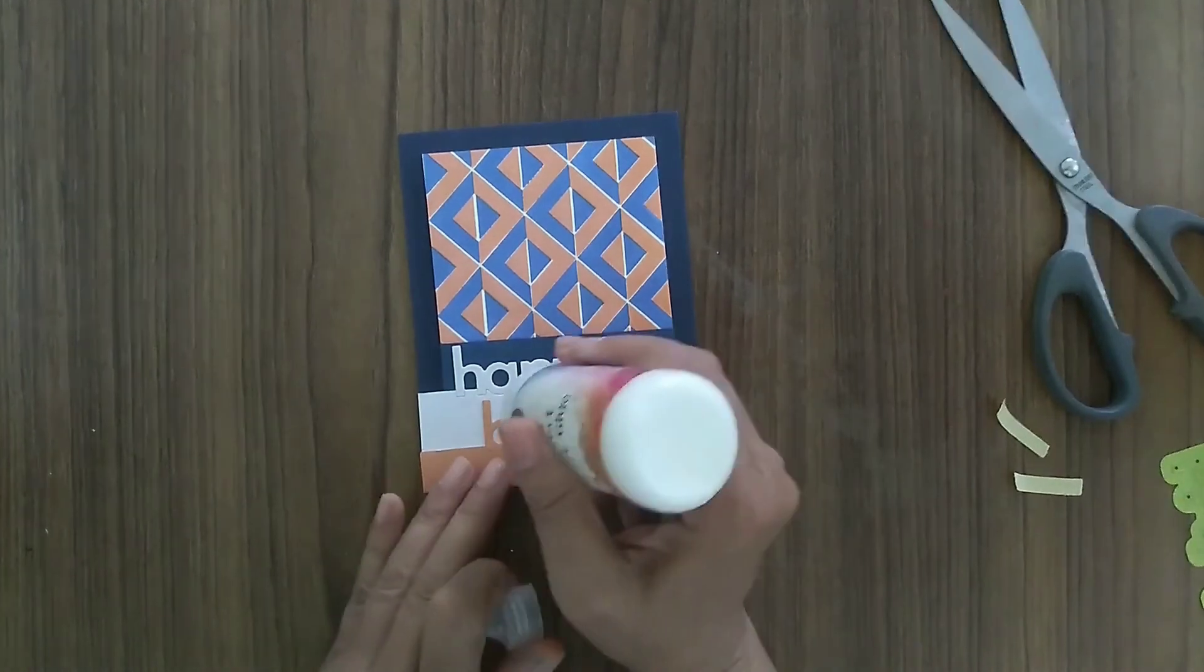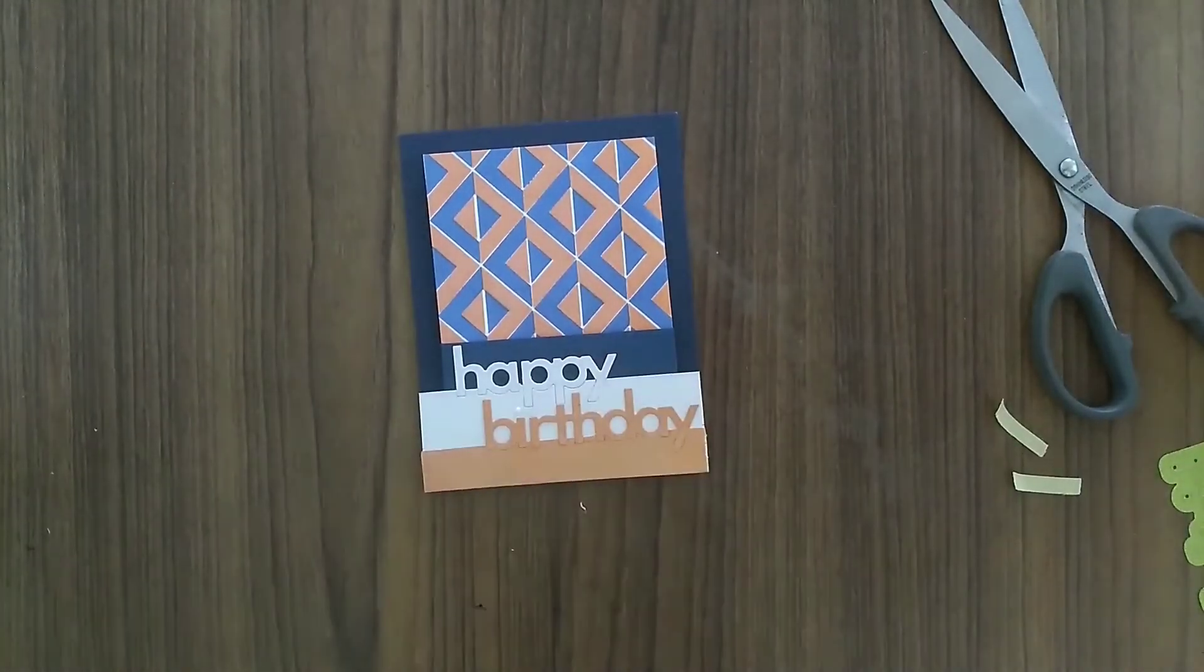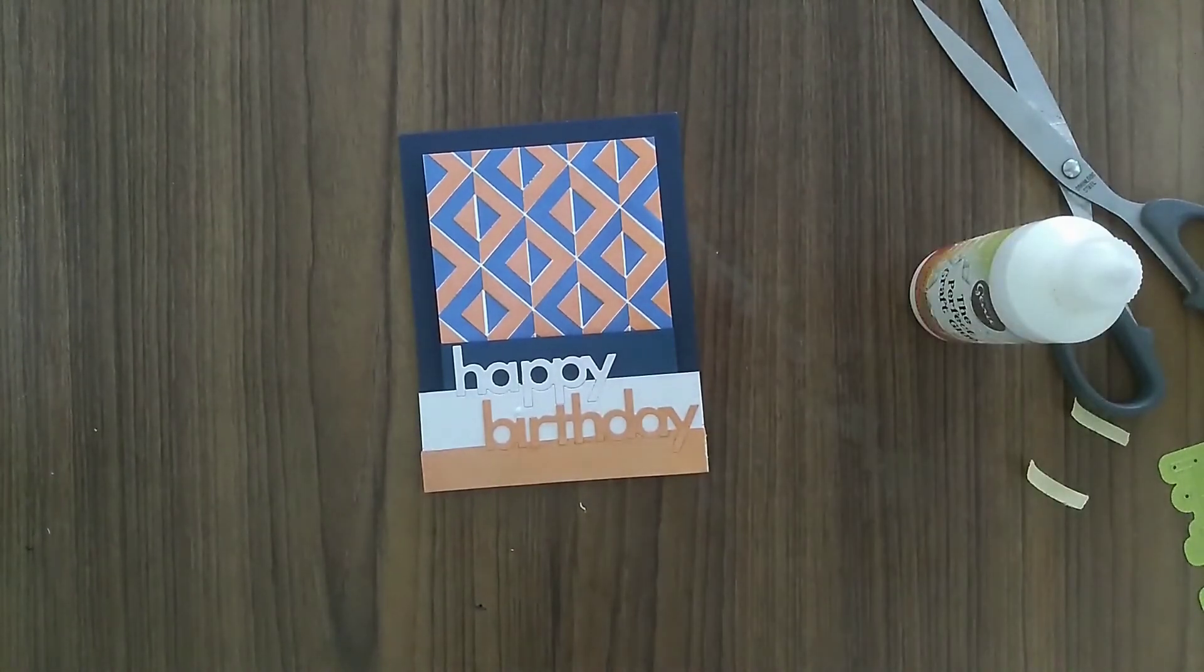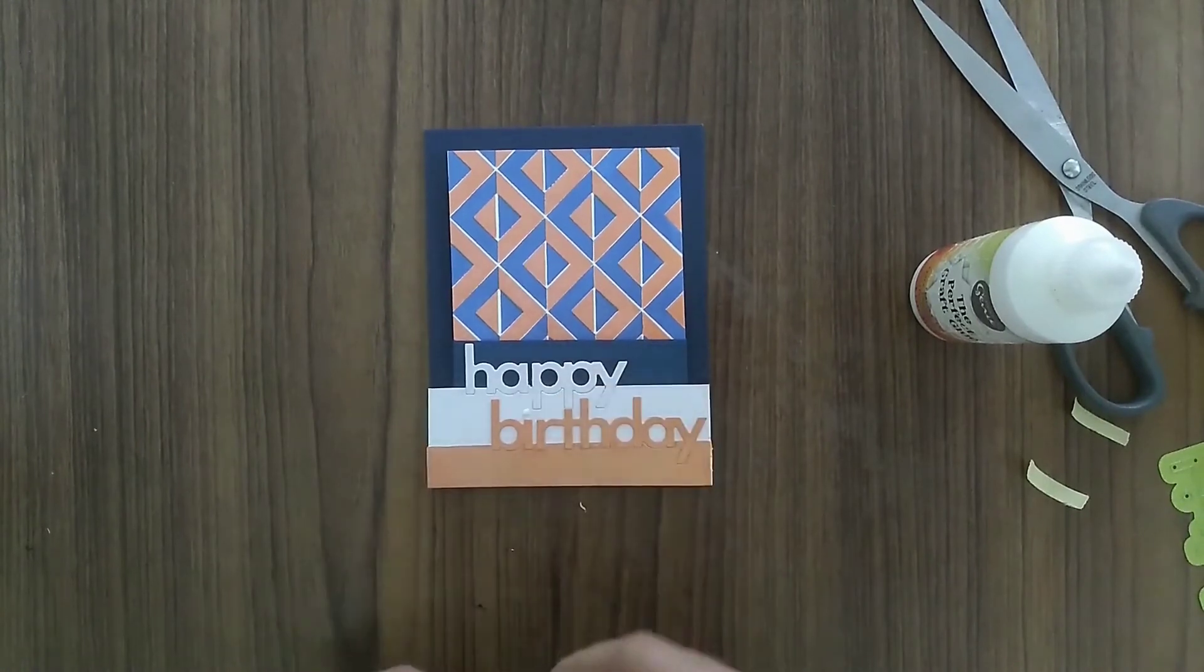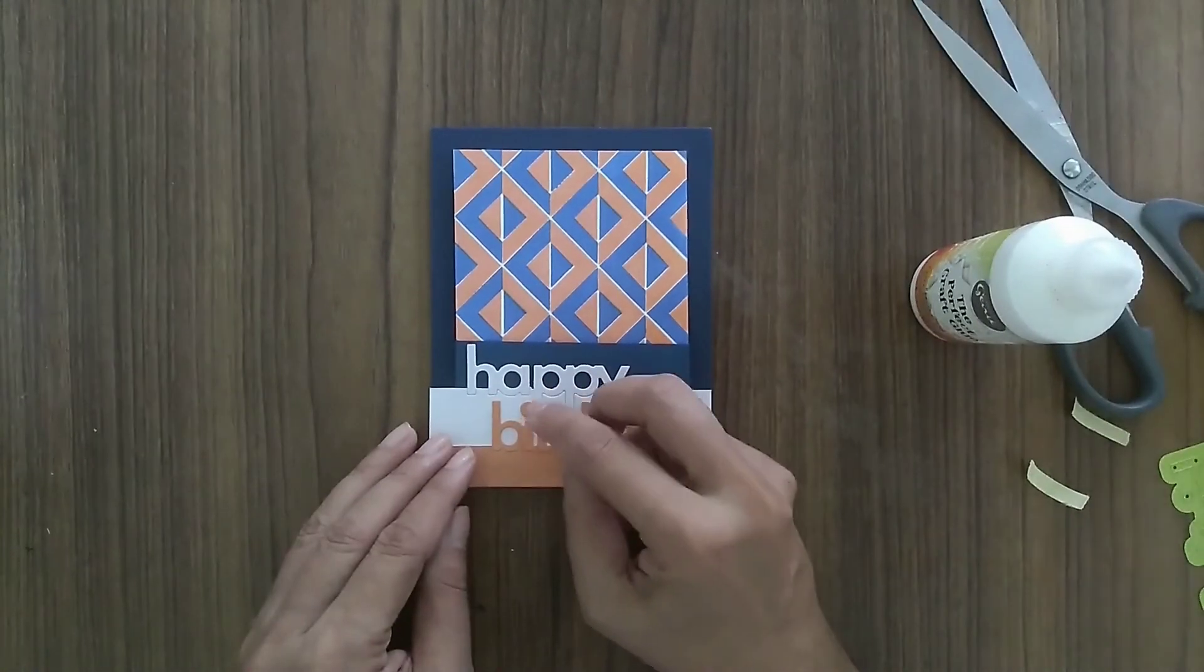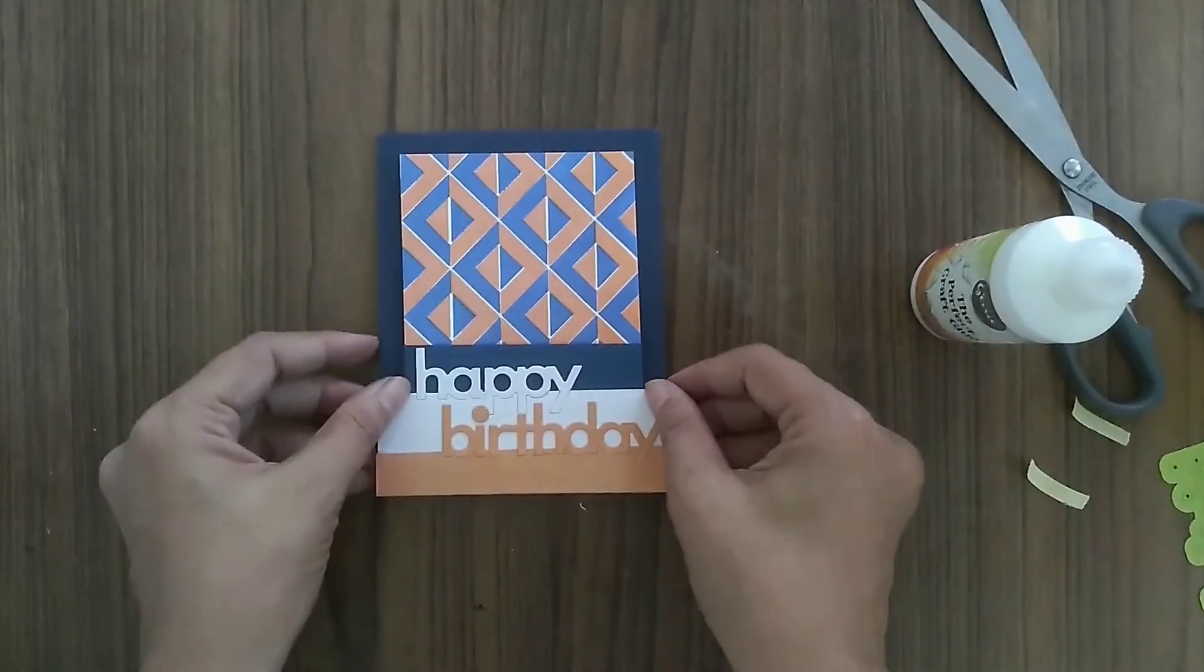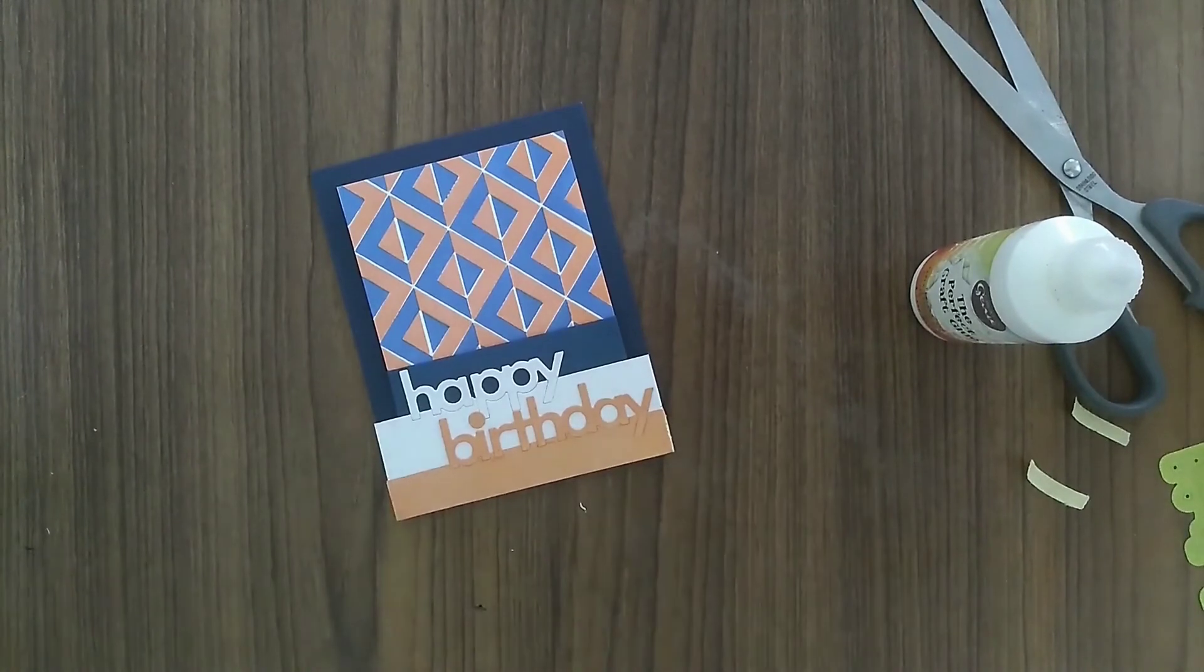And now our card is ready. The only thing left to do is put the little dot on the I. I'll put a little dab of glue there. I saved all the little bits and pieces which were left over from the die cutting. Just make sure you do that and keep them in a small container or something because they tend to get lost, and then it becomes a problem to put the card together. There, the dot is on and our card is ready.